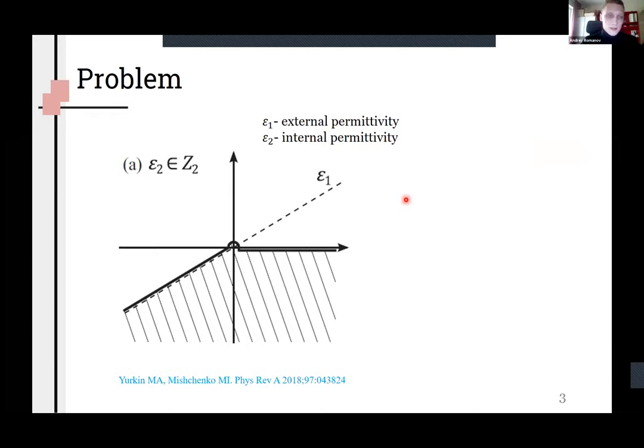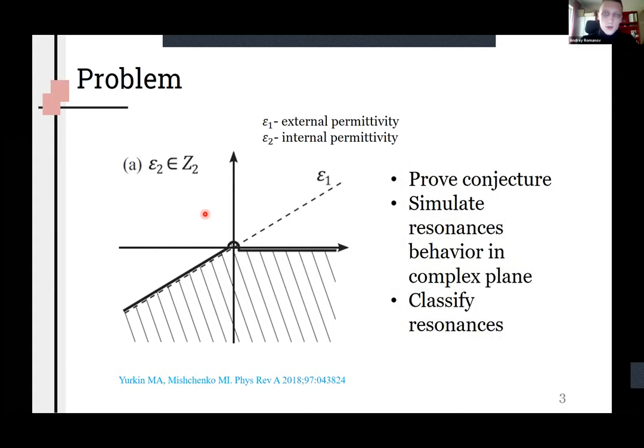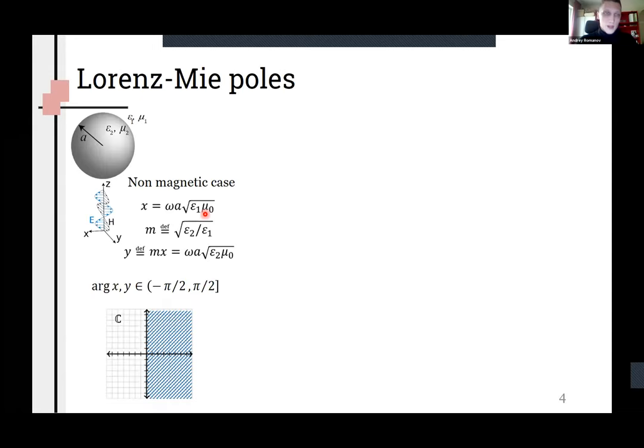Moreover, Yurkin and Mission provided a conjecture recently that for a passive external permittivity all resonances are placed in dashed area of sphere permittivity. So here we are going to prove this conjecture, simulate resonance behavior and classify them.